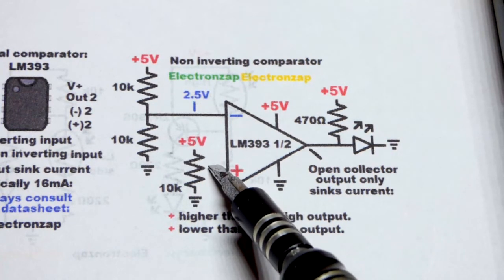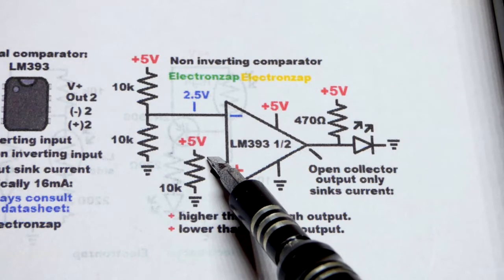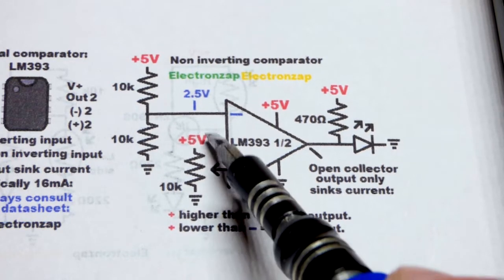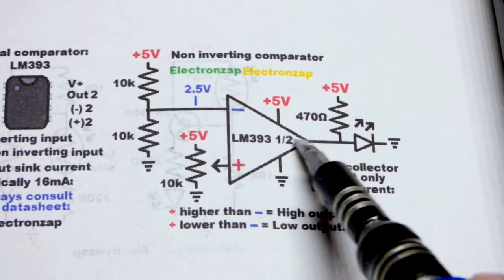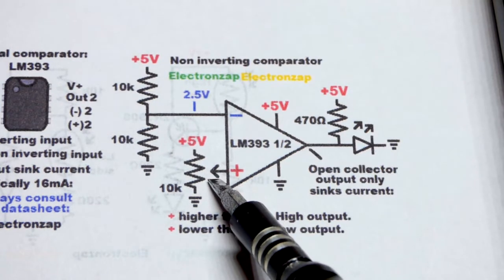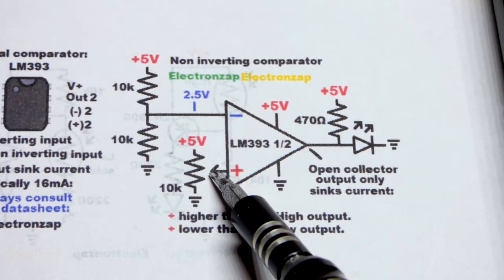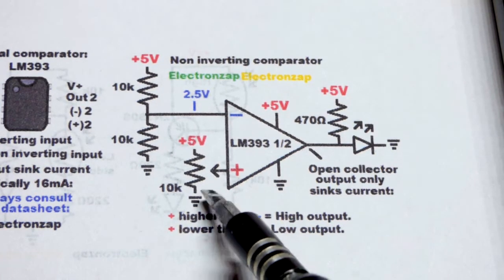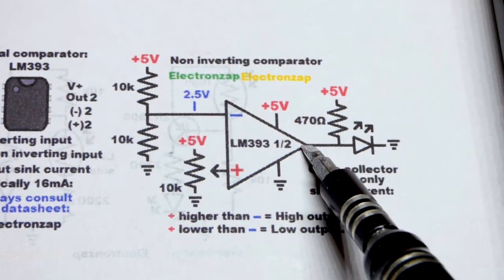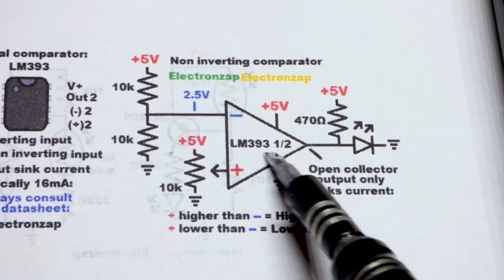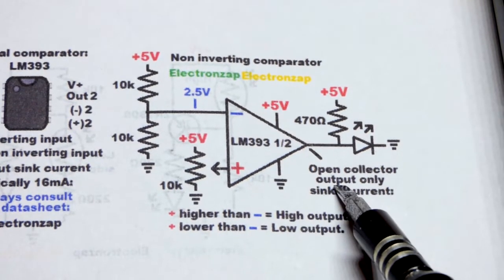And it compares the voltage at the non-inverting input. If we set the trim pot a little more or even farther, then half of the supply voltage up, then the output will be high. If we go down below halfway, 2.5 volts again, or lower, then the output's going to go low. The thing with the output though is the LM393 is an open collector output.